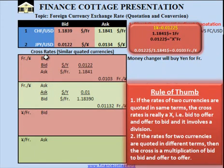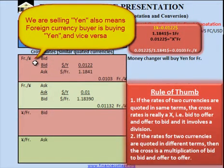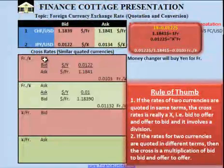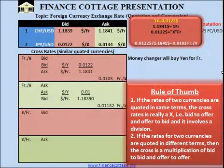So this formula — the intuition behind the formula is given in this diagram. What we are doing basically, we are selling the Yen and taking the dollars, and then for the dollars we are taking the francs. In this way, we can calculate the exchange rate between franc and Yen, or in other words, we can calculate the bid price of francs per Yen.